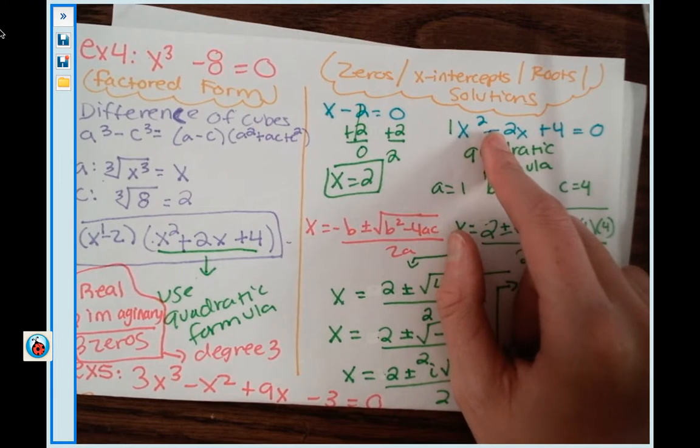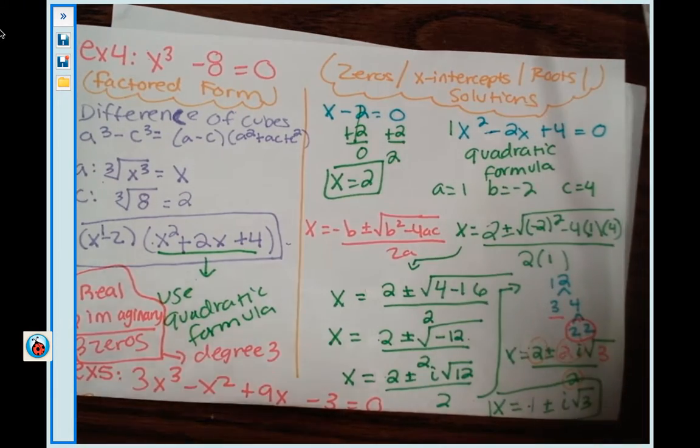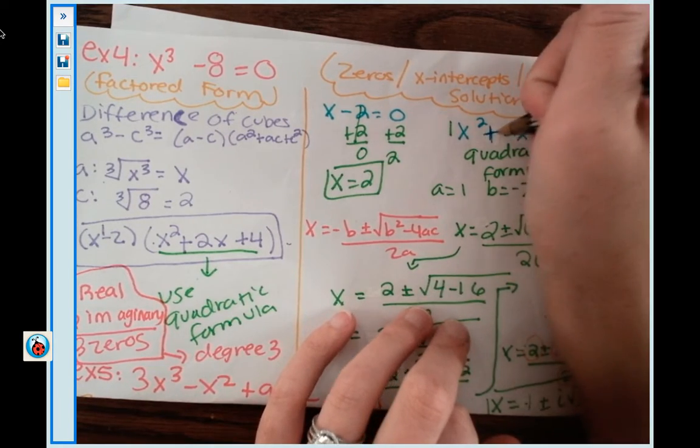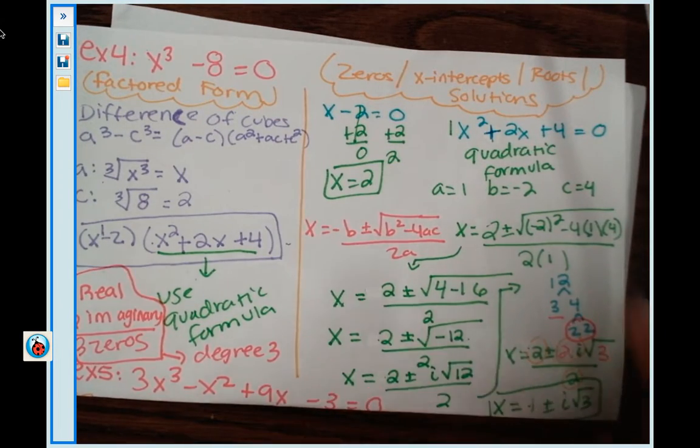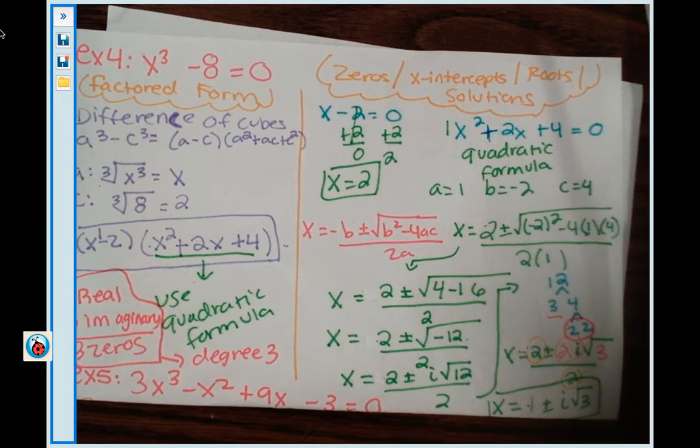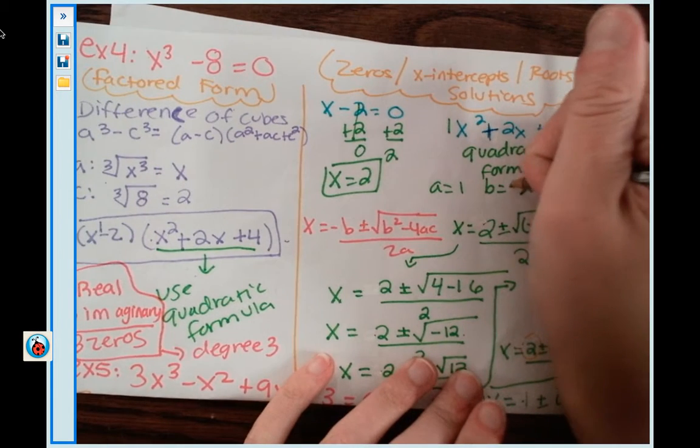So go ahead in your handy dandy notebook, please change these signs with me. So this will turn into a positive 2 now. Okay, so our b value in the quadratic formula is not negative 2, it's now a positive 2. So just change it to a positive 2.